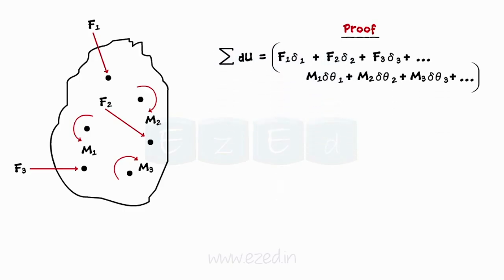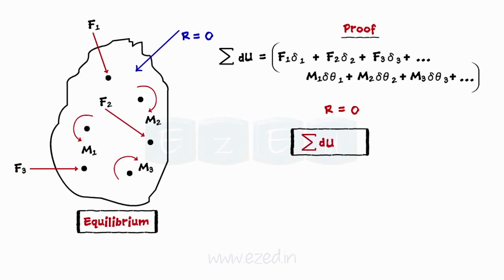The system of these forces will have some resultant R. Hence, the body will have some displacement δ. But if the system is in a state of equilibrium, then R is equal to 0. Therefore, the total virtual work done is equal to 0. Thus, we have proved the principle of virtual work.